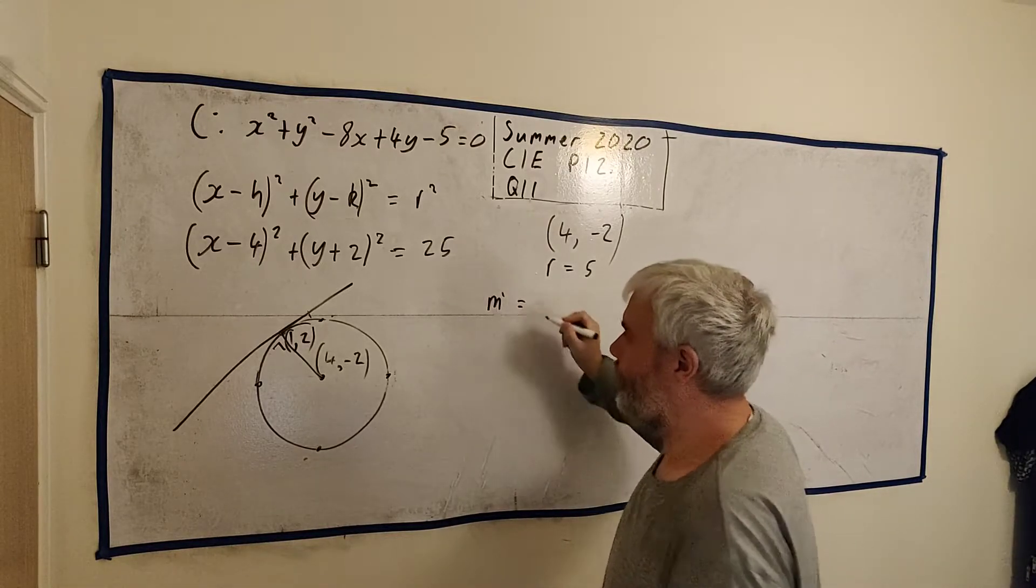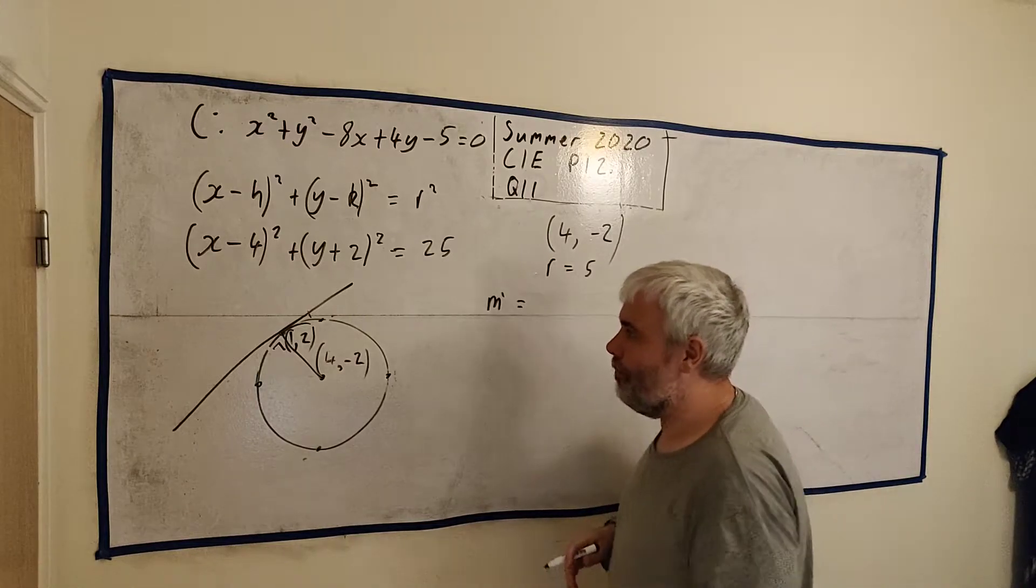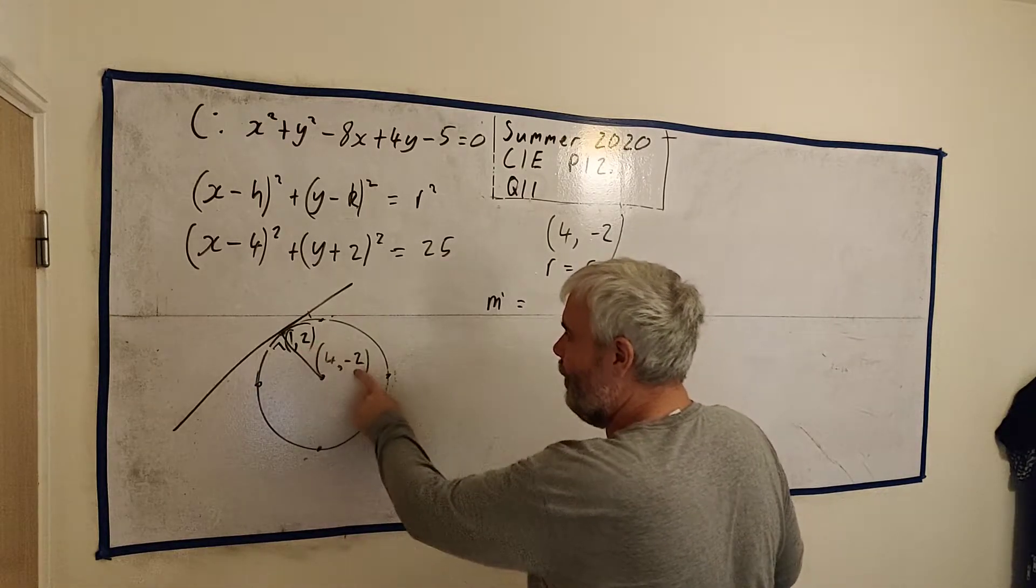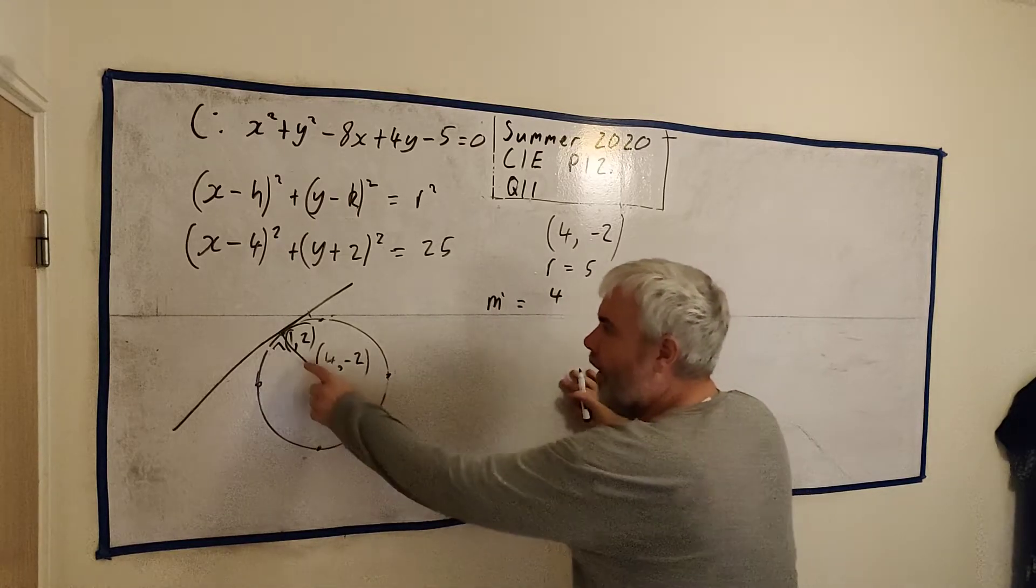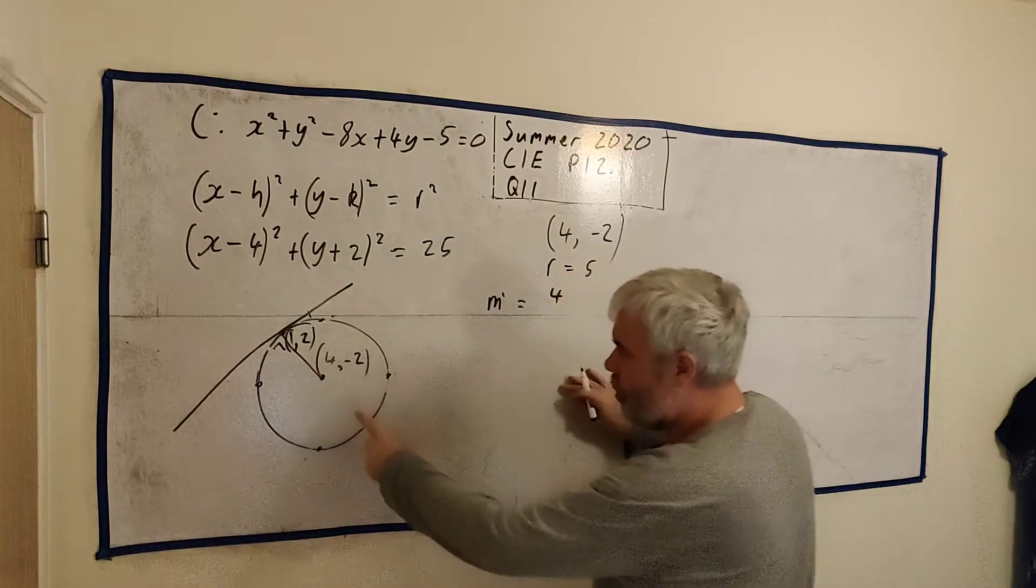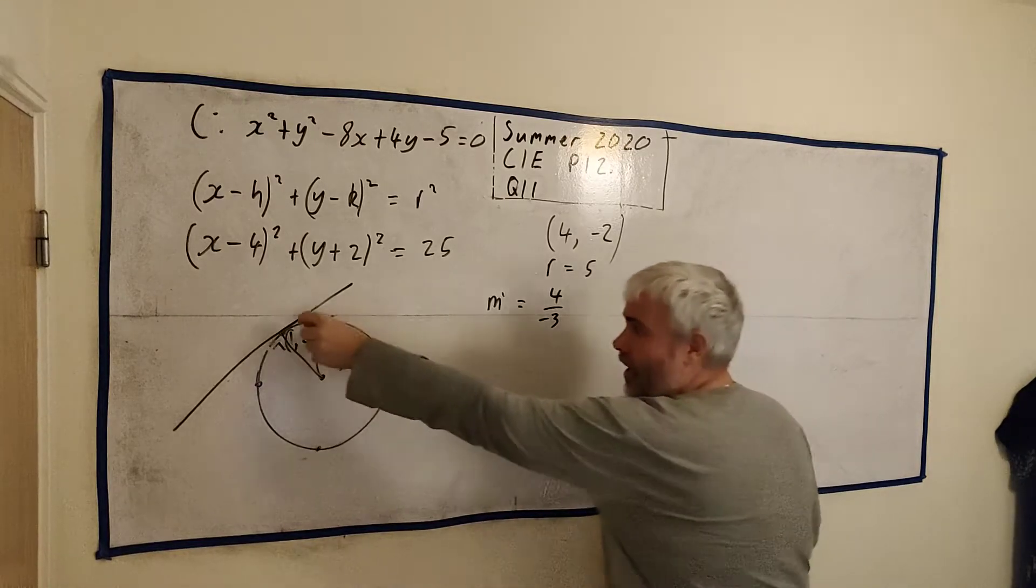So how do we get the equation of a tangent? It's actually quite straightforward because we know two points on this line. So we can get the slope of this line. That will give us the slope of this line. And once we have a slope at a point, we have an equation. So let's do that. Let's find the slope of this line here. I'll call it m prime.